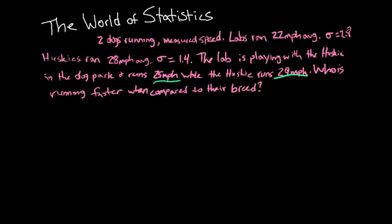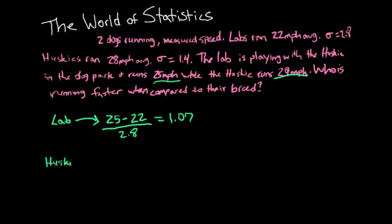To find out, we calculate the z-scores for each dog and compare them back to their breed averages. For the lab: (25 − 22) / 2.8 = 1.07. For the husky: (29 − 28) / 1.4 = 0.71.